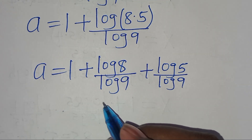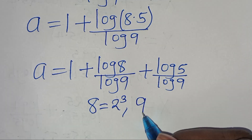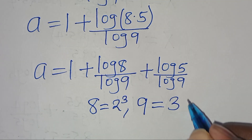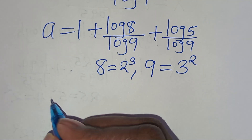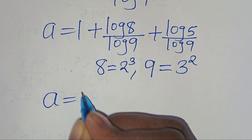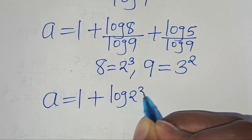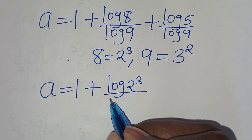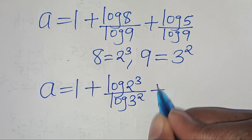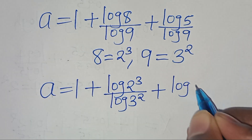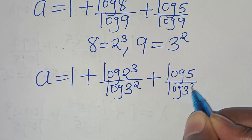The next step is that we can express 8 basically as 2 to the power of 3, and we can express 9 as 3 to the power of 2. So let's substitute this, so that we have a is equal to 1, plus log(2 to the power of 3) divided by log(3 to the power of 2), then plus log 5 divided by log(3 to the power of 2).